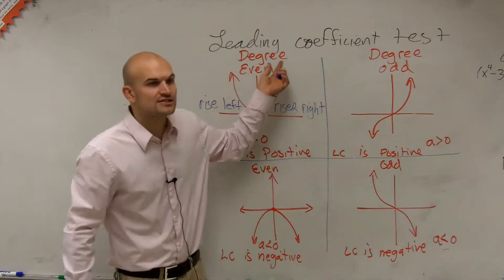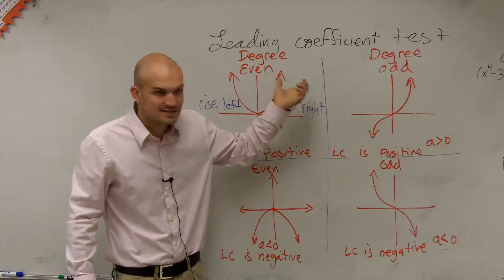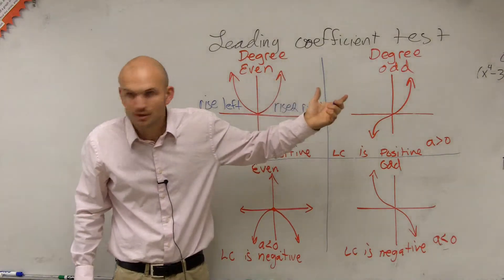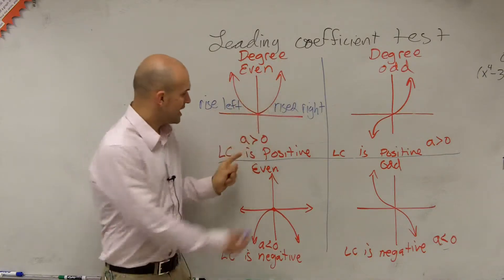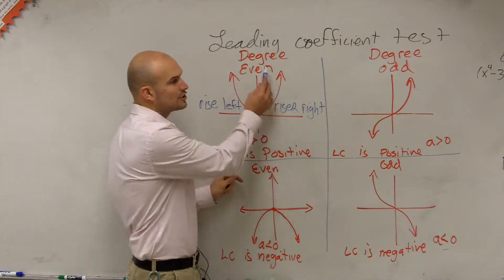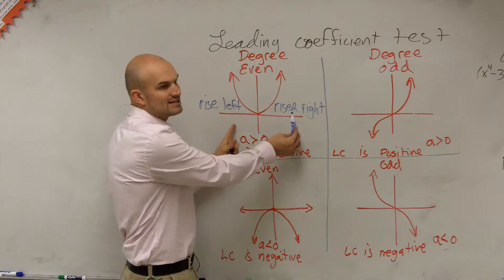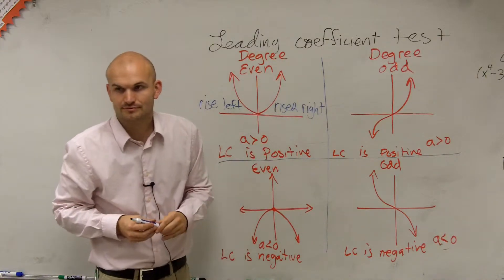It doesn't matter if it's 2, 4, 6, 8, 32, 122, any even number, when your LC is positive and your degree is even, is going to have the exact same end behavior. All right?